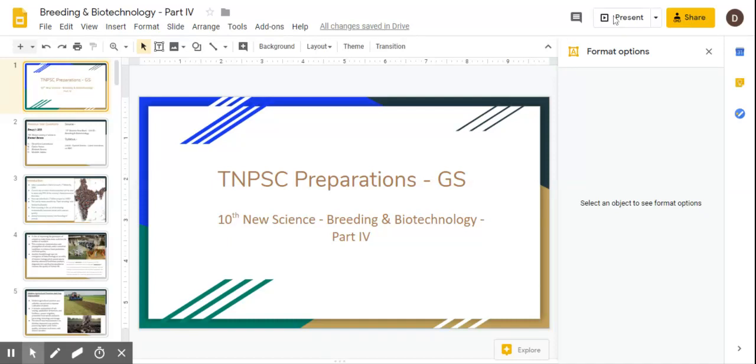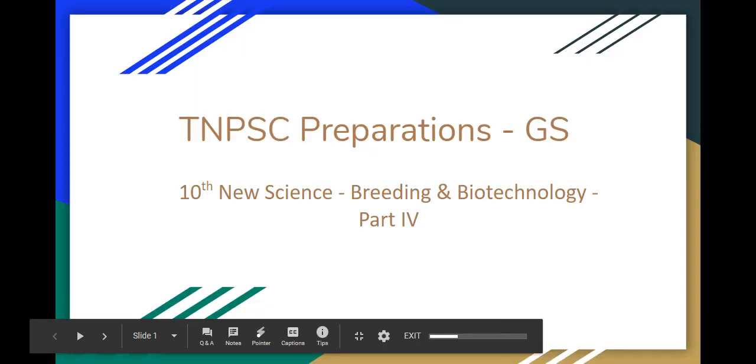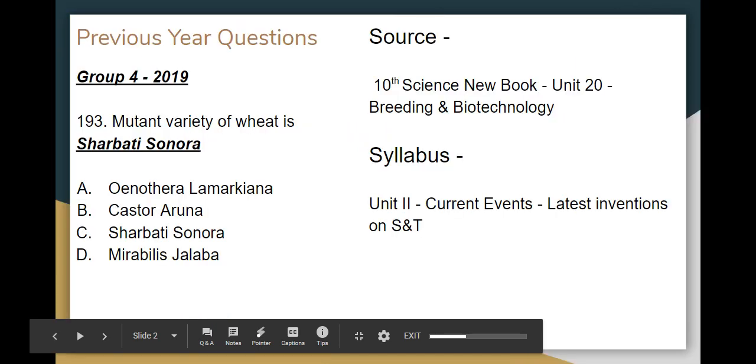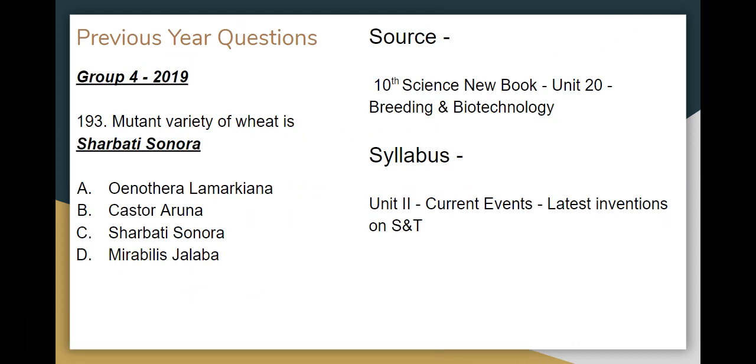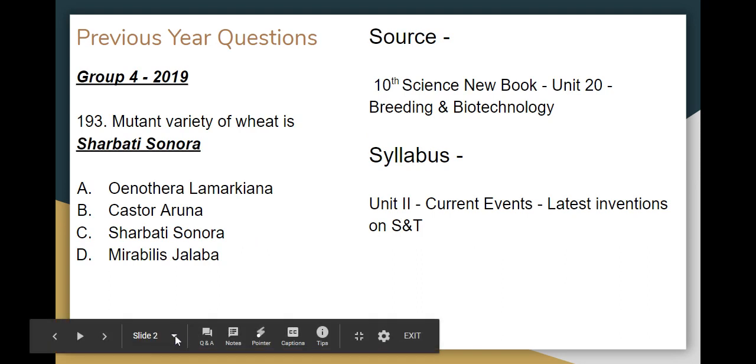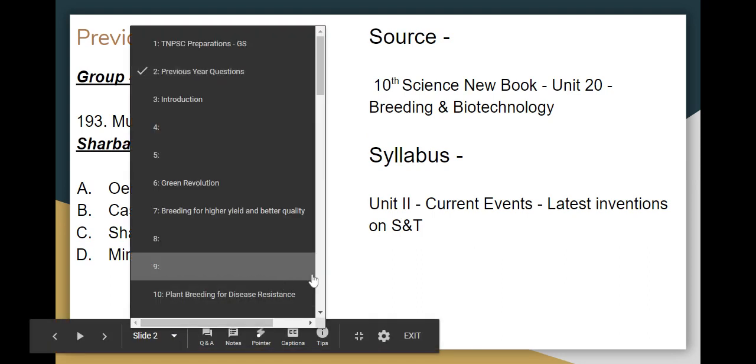This is the General Studies series, specifically General Science. The chapter currently being covered is Unit 20: Breeding and Biotechnology from the 10th new science book. This chapter also covers Unit 2 from the 11th syllabus on current events and the latest inventions in science and technology. We are now on Part 4 and will go to the 38th slide.